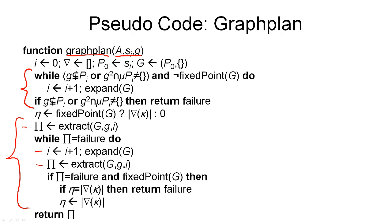We start by initializing some variables. i is the layer we are currently looking at, that we're searching at. Then we have the no-good table. We have our proposition layer P0, which is initially the initial state. And we have our planning graph, which initially only contains the proposition layer P0.